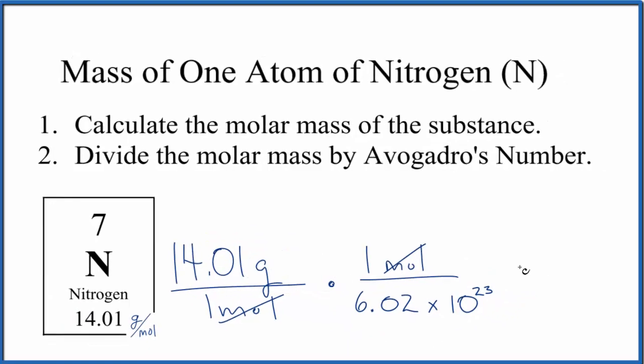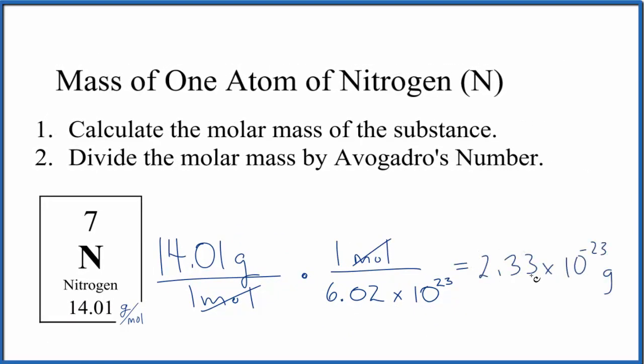When we do this, we get 2.33 times 10 to the negative 23rd grams. That makes sense. This is a really small number, but atoms are really small, so the mass should be a very small number.